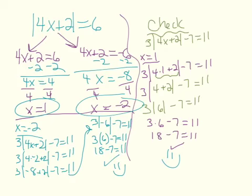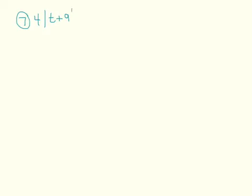This is a long and complicated process, but it's a necessary process, especially if you have a test or quiz. I'll probably give one or two examples that are this long on a test or quiz. Here's another example I would like you to try on your own: four times the absolute value of T plus nine minus five equals 19. Please pause the video, take a few minutes and try it.